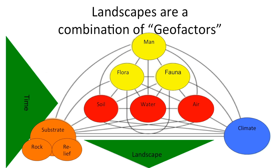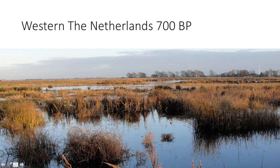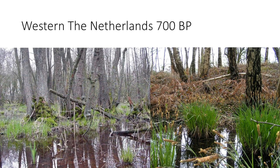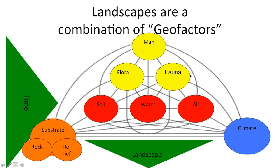Here is an exercise for your own benefit. These are the geo-factors that shape the landscape — as discussed in lecture two. What I want you to do is fill in the right words for all the geo-factors: what was the soil 700 years BP, what was the flora, the climate, the influence of humans, the relief, the rock, the water — et cetera. Look at peat bogs and swamps for the west of the Netherlands and these swamp forests and try to fill it in.